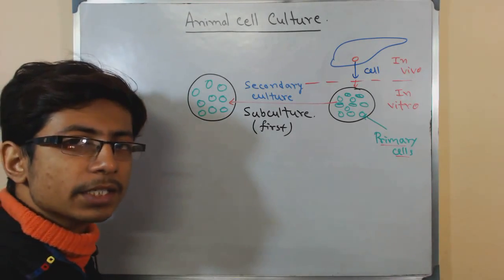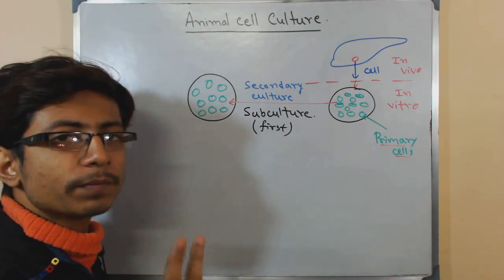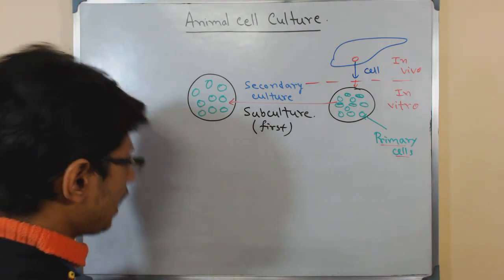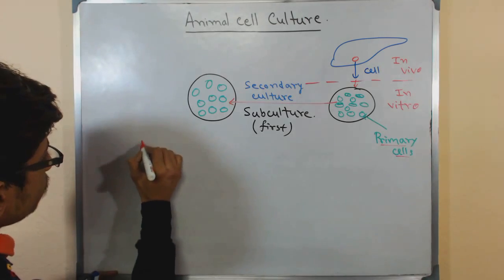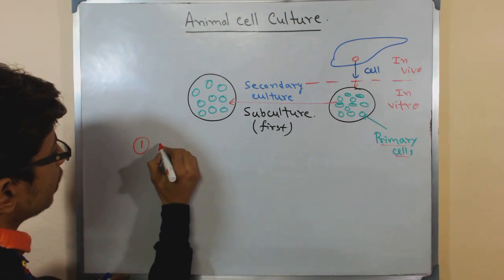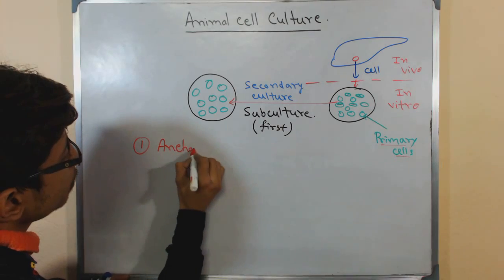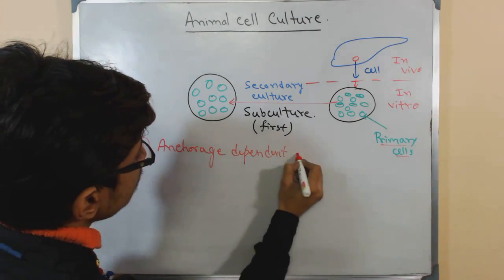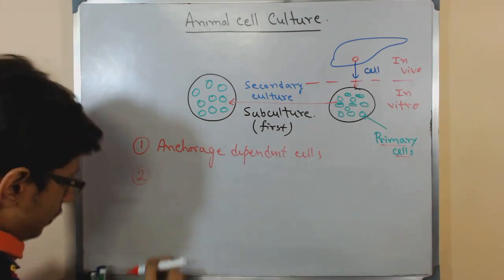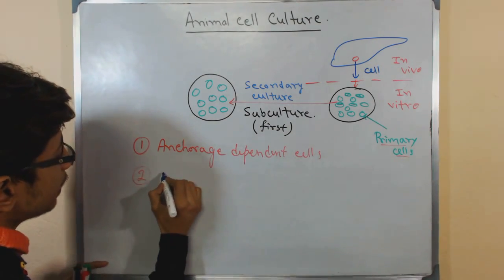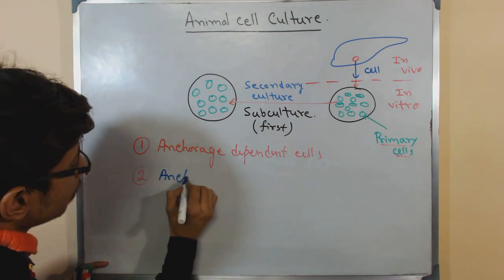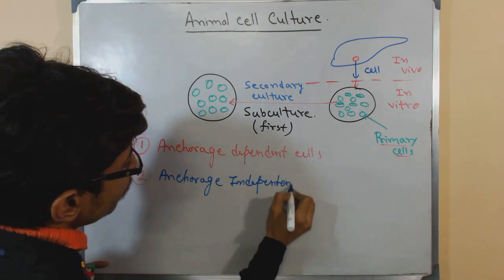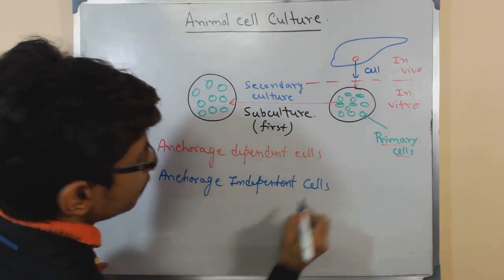Depending upon the anchorage of a cell, we can have two different types of culture and two different states of culture. First of all, we have some cells that are called anchorage dependent cells. And we also have a second type of cells that are called anchorage independent cells.